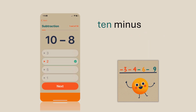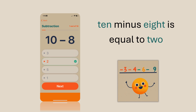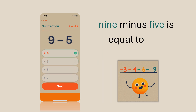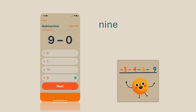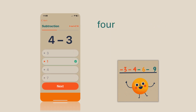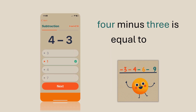10 minus 8 is equal to 2. 9 minus 5 is equal to 4. 9 minus 0 is equal to 9. 4 minus 3 is equal to 1.